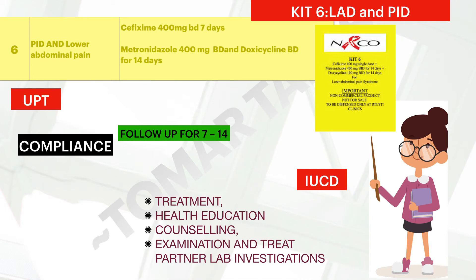Ranitidine is given to prevent gastritis since many drugs are prescribed together. Also, during examination, the patient should be checked for the presence of an intrauterine contraceptive device (IUCD); if present, it should be removed under antibiotic cover.